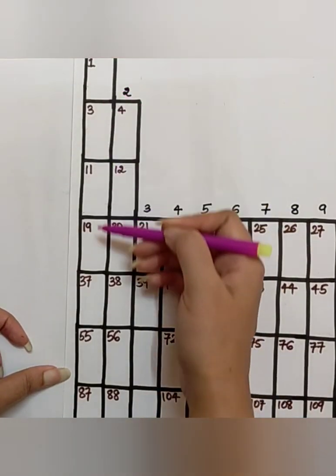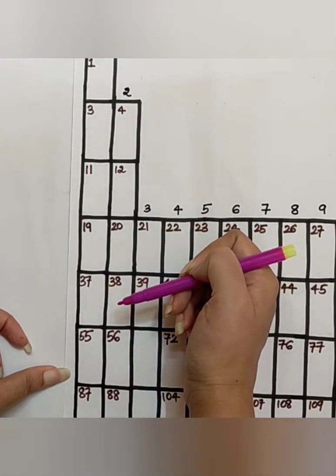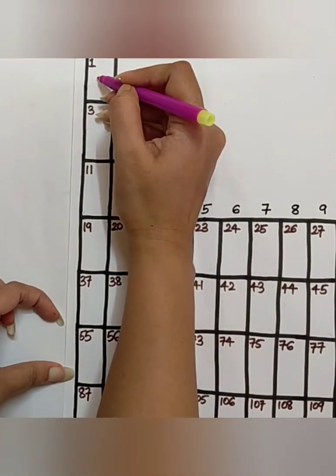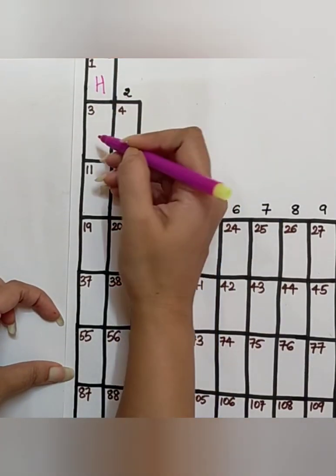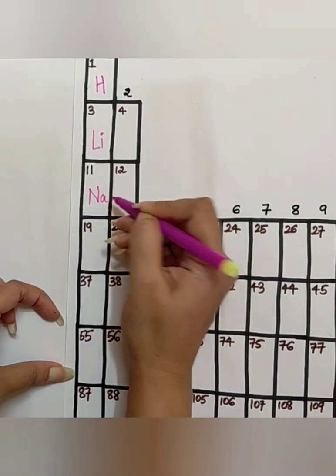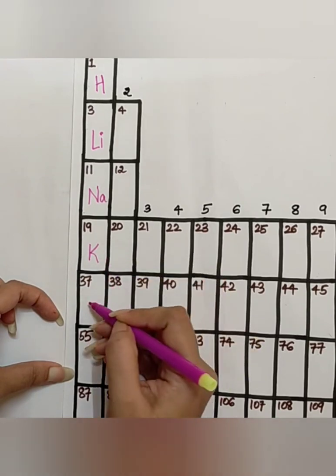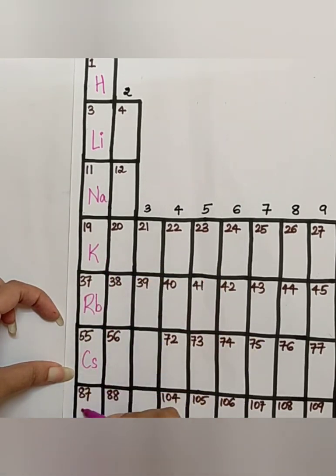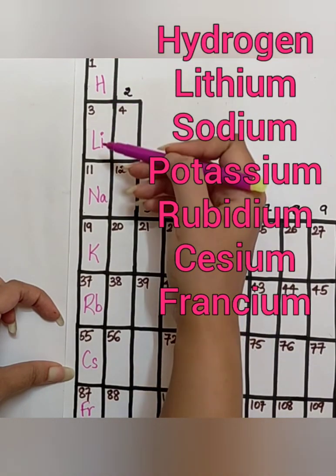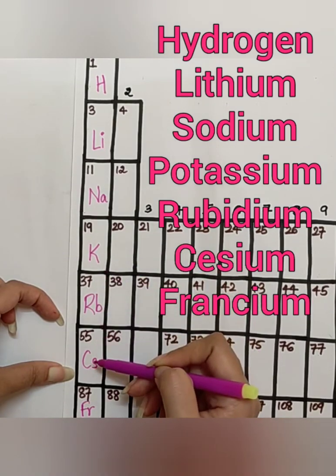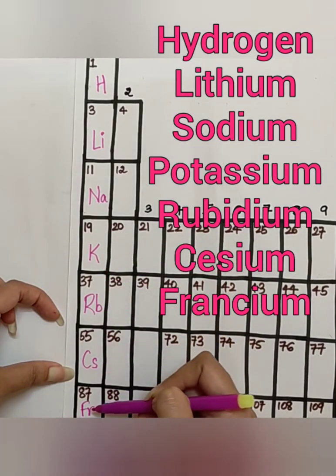So this is our first group. And to remember this, you have to remember this phrase. So this is Hydrogen, Lithium, Sodium, Potassium, Rubidium, Cesium and Francium.